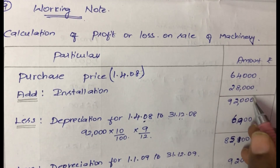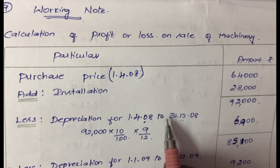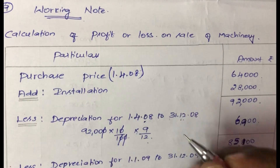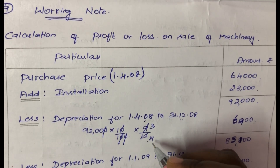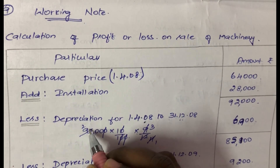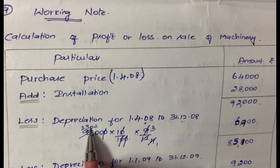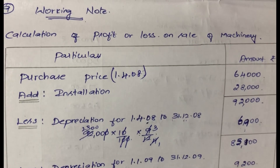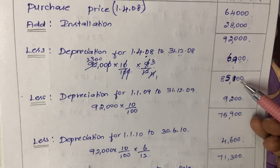Original cost is Rs. 92,000, into rate of depreciation 10%, i.e., 10 by 100, into number of months 9 by 12. Calculating this gives Rs. 6,900. This is the first year depreciation. Rs. 92,000 minus Rs. 6,900 equals Rs. 85,100. This is the book value at end of first year.